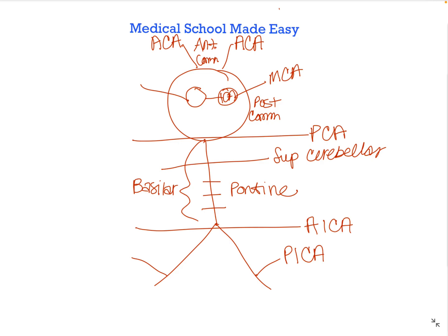We already have the inferior cerebellar arteries filled in. Continuing down both sides, we have the vertebral arteries. The last thing we'll draw in — the zipper of his pants, however you want to remember it — would be the anterior spinal artery coming off those vertebral arteries, and then that goes down the spinal cord.